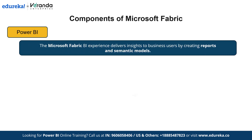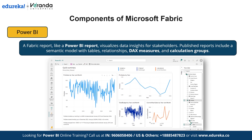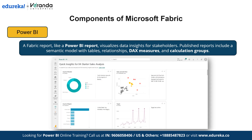The Microsoft Fabric Business Intelligence experience is designed to provide valuable insights to business users. Important elements such as reports and semantic models are developed within this experience. A Fabric report, like a Power BI report, is a business-facing data visualization used to present insights to stakeholders. When a report is published, it is accompanied by a semantic model that includes backend components such as tables, relationships, DAX measures, and calculation groups — this model organizes and manages the data that powers the visualizations.